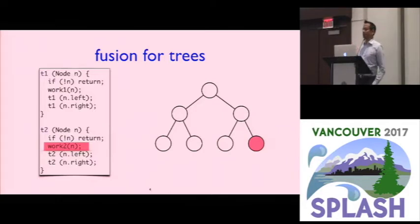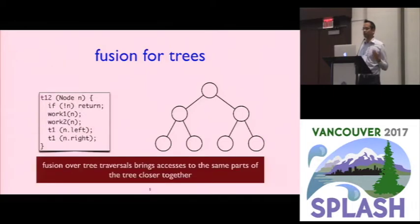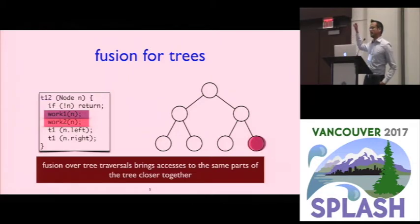So as Gregor pointed out, the way that people fix this problem is you don't write this as two tree traversals. You write this as a single tree traversal, which we're going to call T1,2 because it's doing both one and two. And it does both pieces of work. But now it does that work in a better order. It produces a better schedule where the same traversal is doing both pieces of work. And I get to do all of the work on the root node at the same time and then all of the work on the next node and so on and so on. So I bring accesses for the same part of the tree closer together. I get better locality.